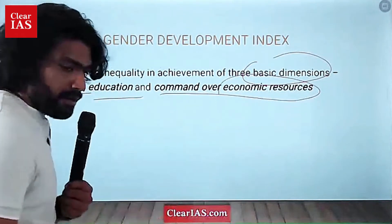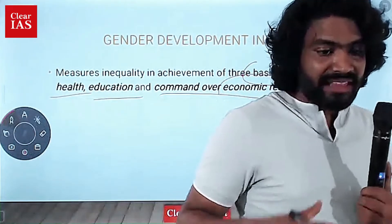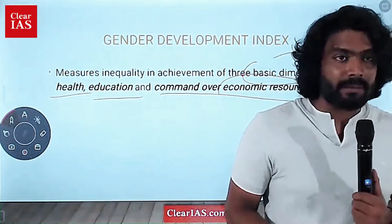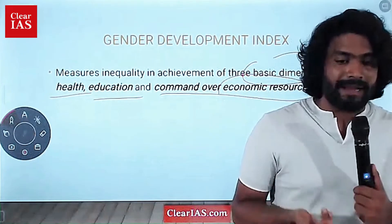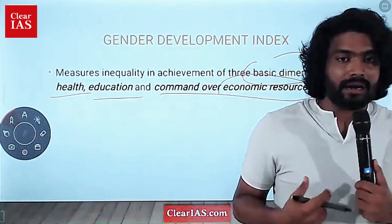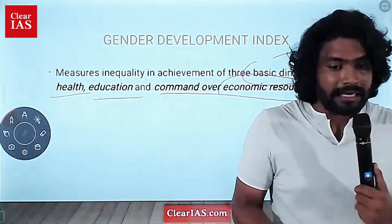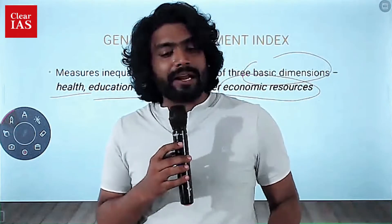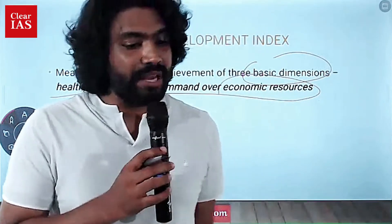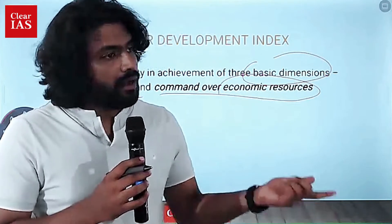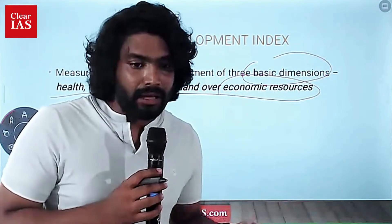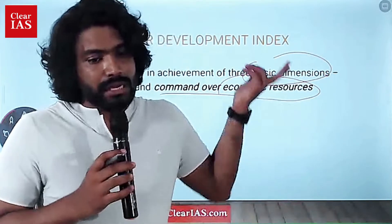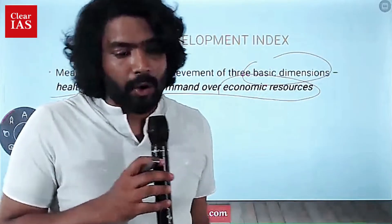Command over economic resources means how far people can wield power over economics — how far they can determine how to spend their money, and how far they have good income. Health, education, and command over economic resources are more or less similar to HDI's dimensions of health, education, and GNI per capita.